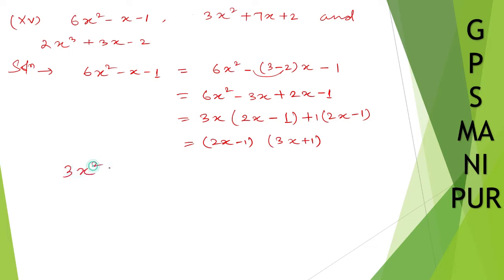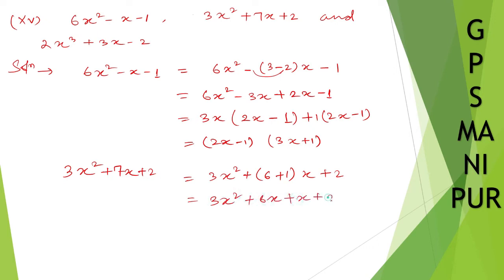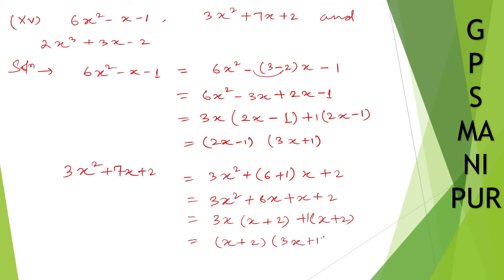For the next one, 3x squared plus 7x plus 2, splitting the middle term: 3 times 2 is 6, so we write 3x squared plus 6x plus x plus 2. Taking 3x common gives 3x(x plus 2), and taking (x plus 2) common gives (x plus 2)(3x plus 1).